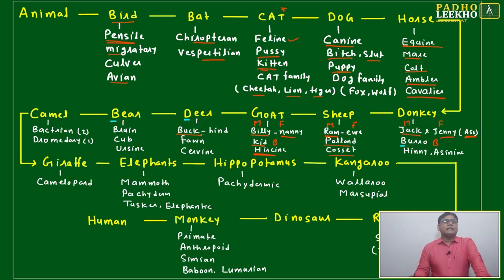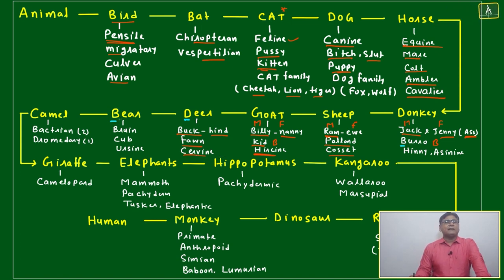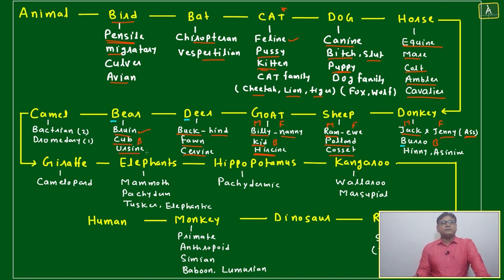After deer, the male is buck, female is hind, and fawn is a baby. Cervine is related to deer. After that, bear: bruin is related to bear, female bear, and cub is a baby bear.